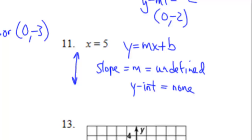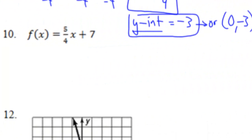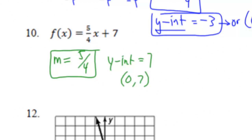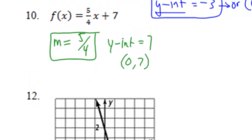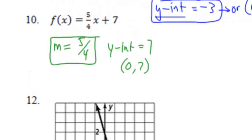Go ahead and hit pause to check number 10. Welcome back — you should have gotten y equals 5/4 x plus 7, which is in mx plus b form. So m is 5/4, and the y-intercept is (0, 7).